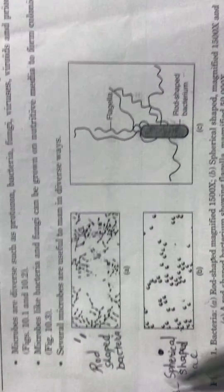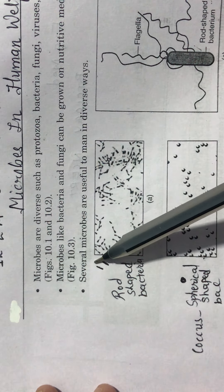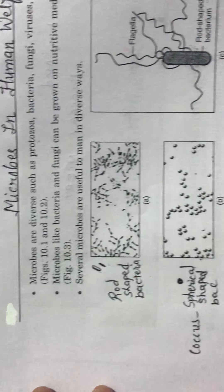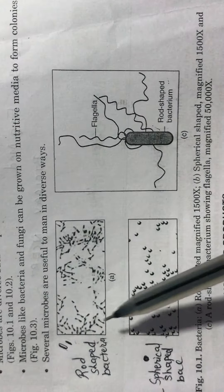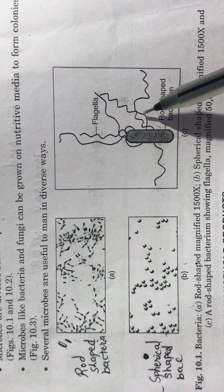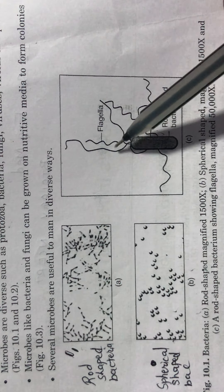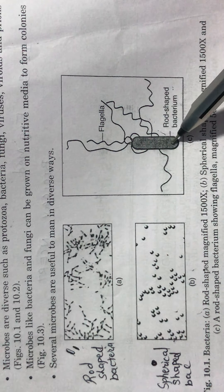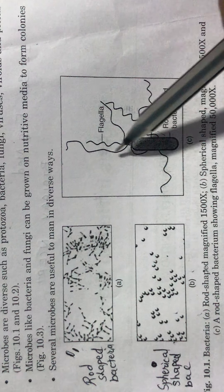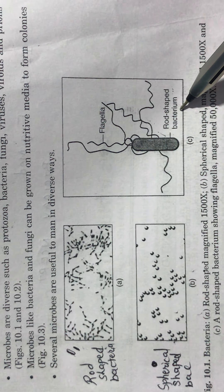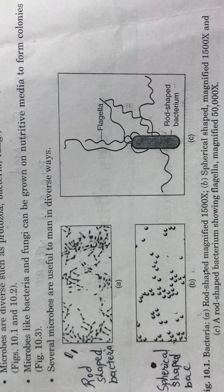Spherical bacteria are known as cocci. Rod-shaped bacteria are cylindrical in shape — they are called rod-shaped bacteria. This diagram shows how bacteria look under a simple microscope and under an electron microscope. Here you can see the flagella of the rod-shaped bacterium.